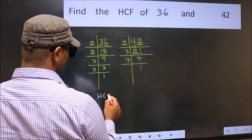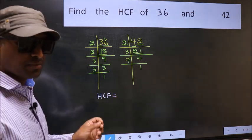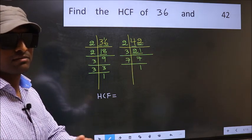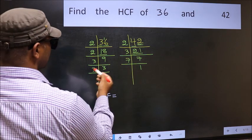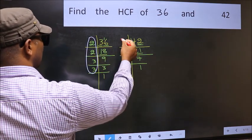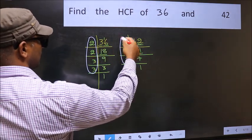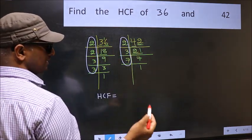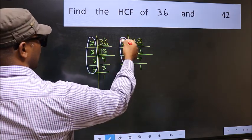Therefore, our HCF is the product of the numbers which should be present in these 2 places. That is here and also here. Here and here. So now let us find the numbers which should be present here and here.